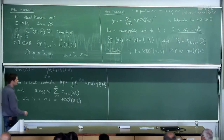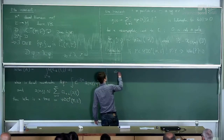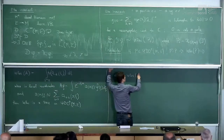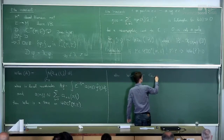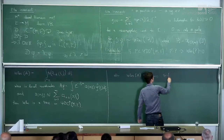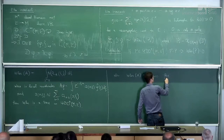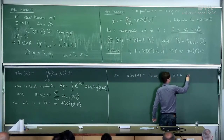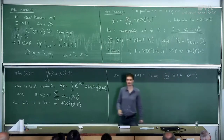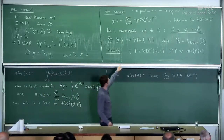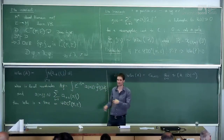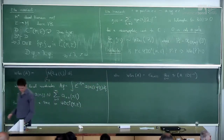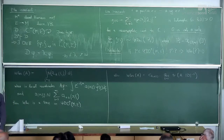Another interesting thing is that you can also write the Wodzicki residue of an operator A as some constant depending on D and the rank of E, times the residue at S equals zero of the trace of A times D^{-S}. That's an alternative definition which immediately shows the connection. You can also use the fact that the trace on the algebra of pseudo-differential operators is unique up to a factor, though that also requires an unpleasant computation.